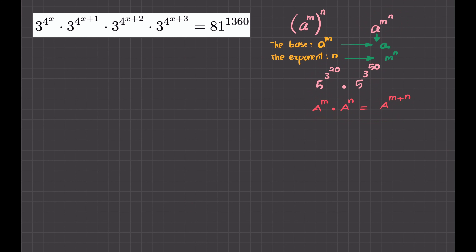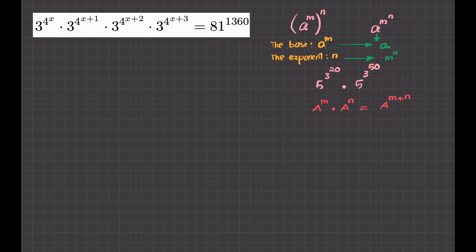Do you think this formula is applicable for this case? Let us review. This is a power and so is this. Are the bases the same? Yes. According to what we established, the base here is 5, and the base here is also 5. So I am multiplying 2 powers with the same bases. The rule tells me to write the base and add the exponents. So I write the base and add the exponents.